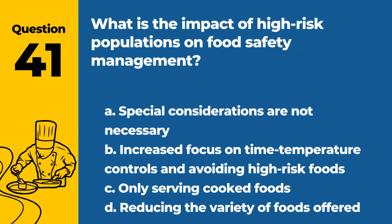Question 41. What is the impact of high-risk populations on food safety management? A. Special considerations are not necessary. B. Increased focus on time-temperature controls and avoiding high-risk foods. C. Only serving cooked foods. D. Reducing the variety of foods offered. Answer: B. High-risk populations require stricter time-temperature controls and careful handling of high-risk foods to ensure safety.